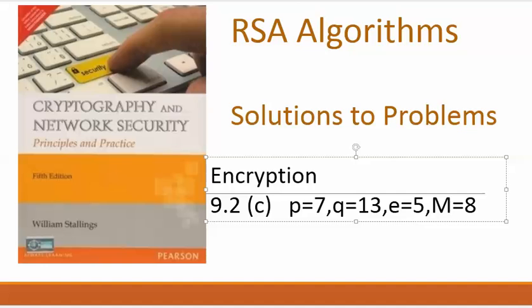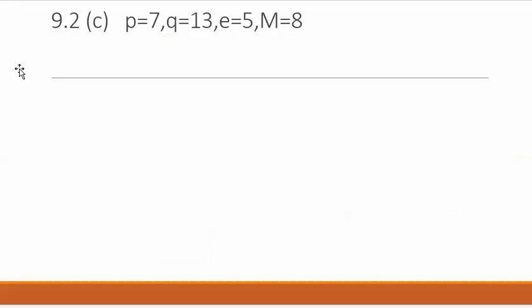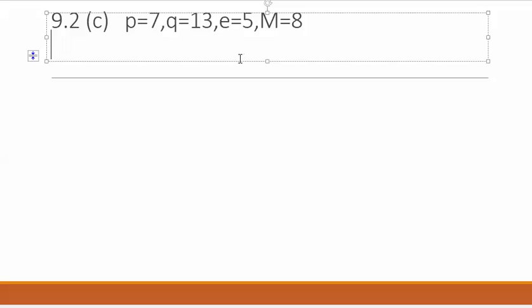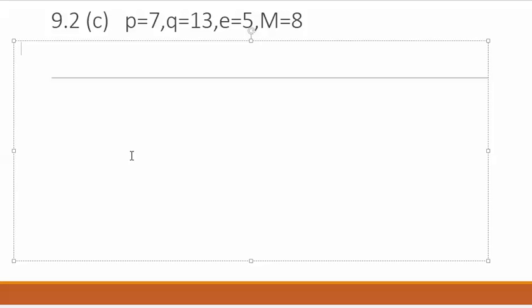To do the encryption, we will use the formula C = M^e mod n, where n is given by p times q.